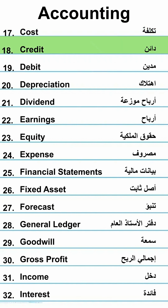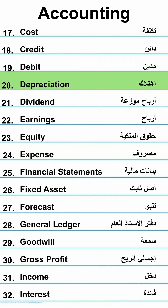Credit — Dain. Debit — Medine. Depreciation — Ehtla. Dividend.